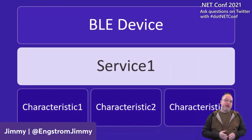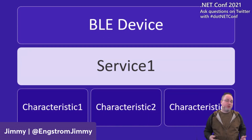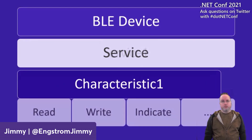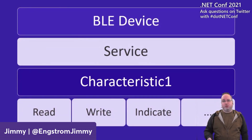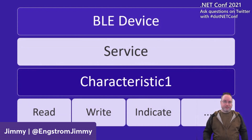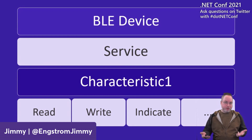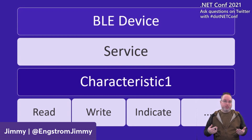Each service has at least one characteristic — you can think of them as methods or events. Every characteristic has one or more ways to access it. For example: read and write, which you can think of as methods, and indicate or notify, which are more like events.